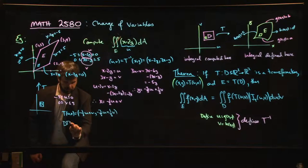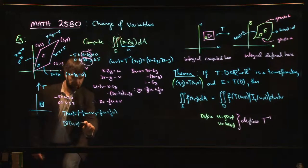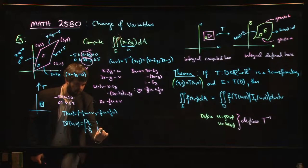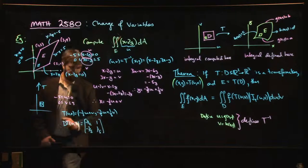The derivative of that transformation is going to be, so we do the u derivatives and then the v derivatives: minus 1/5, minus 3/5, 2/5, 1/5.